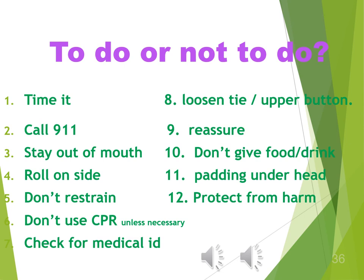Don't use CPR if the person is breathing normally — even great CPR often results in broken ribs. Check for a medical ID necklace or bracelet — it might give specific instructions. Loosen a tie or collar if it seems to restrict airflow. When they come out of the seizure, they'll be very confused. Reassure them and persuade them to stay put until they're clear or until an EMT arrives. Don't give food or drink — if they go into another seizure, they could choke.